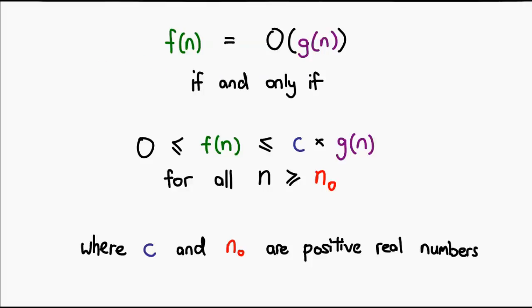The function f(n) needs to be greater than or equal to 0. Then the function c times g(n) needs to be greater than or equal to f(n). This needs to be true for all values of n greater than a threshold n0. Both c and n0 need to be positive real values.